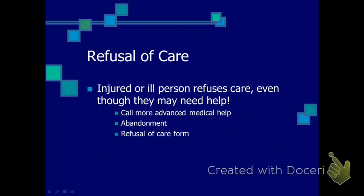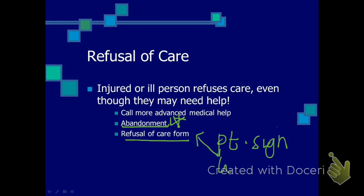Even if a patient refuses care, you are not supposed to leave them until EMS arrives — you could be held liable for abandonment. Never leave the scene until someone with equal or higher training comes to relieve you. I've had situations where a person did not want me to help them for racial reasons — I called 911, they came, helped the patient, and I did not leave the scene until after the ambulance left. If possible, draw up a form and have the patient sign it along with a witness to relieve you of legal liability. Keep it for about seven years.